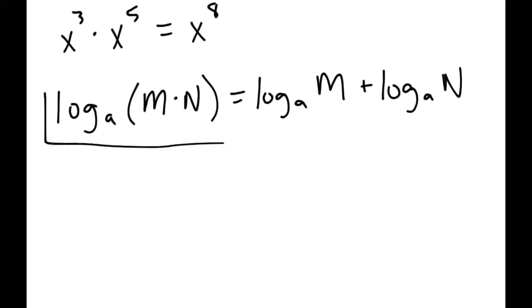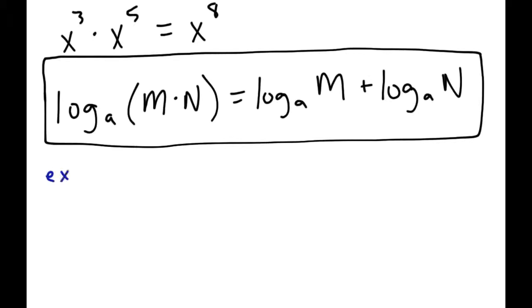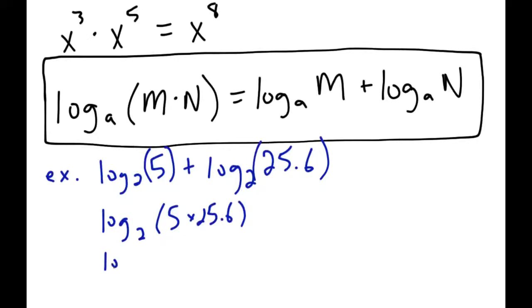That's the first of the formulas you're going to use. You either get the question where they're added together, so you have log of one number plus log of another and you merge them together to be multiplying, or the other way around. Let's try one quick example. If I gave you log base 2 of 5 plus log base 2 of 25.6, using this formula in reverse order, that would be the same thing as log base 2 of 5 times 25.6.